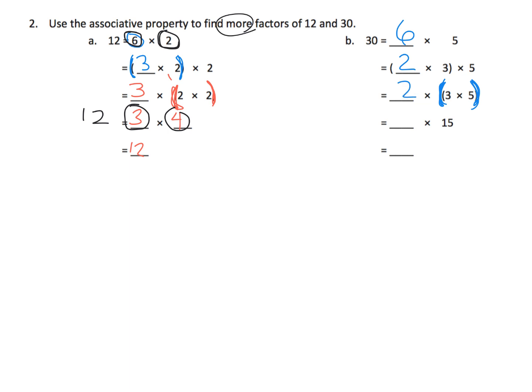And then we're going to change the grouping. So that's the associative property. And now we have 2 is on the outside. So it's 2 times 3 times 5. 3 times 5 is 15 right here. And 2 goes right there.